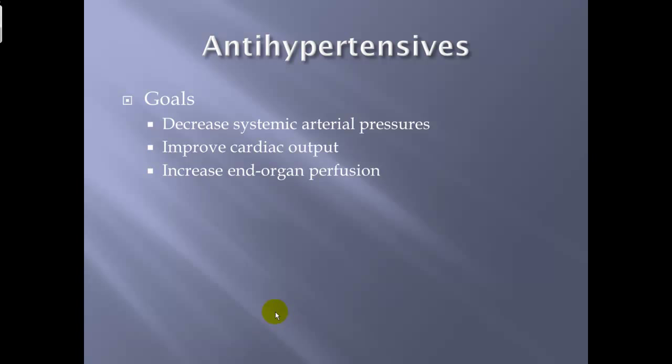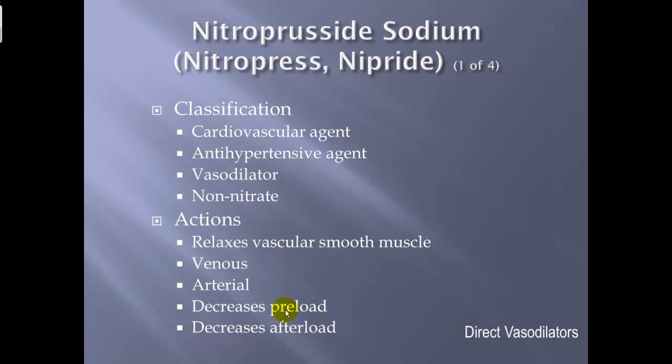Nitroprusside sodium — also called Nitropress or Nipride. Classification: cardiovascular agent, antihypertensive agent, vasodilator, non-nitrate. It relaxes smooth muscle — both venous and arterial — and decreases preload and afterload.